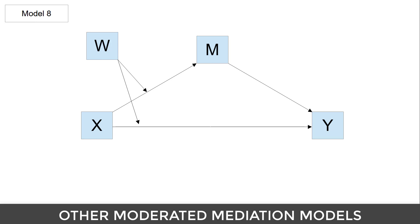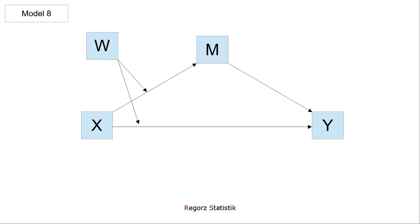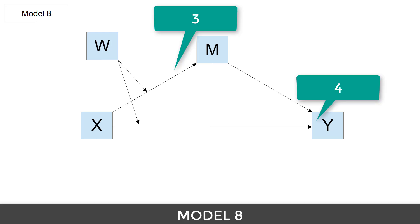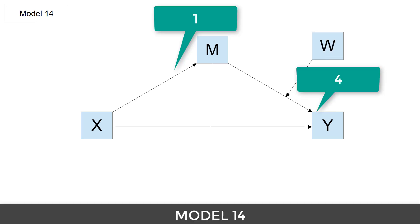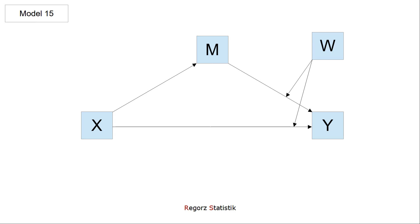The same logic applies for the other models — models 8, 14, and 15. The only difference is the number of predictors. In model 8, there are three predictors for the A-path and four predictors for the B-path. In model 14, there is one predictor for the A-path and four for the B-path. In model 15, there is one predictor for the A-path and five for the B-path. Of course, for models 14 and 15 it's the interaction of the B-path multiplied with the A-path. If you have covariates, add the number of covariates to those numbers.